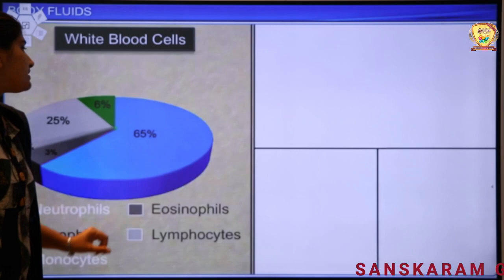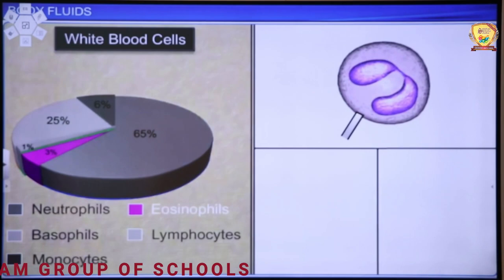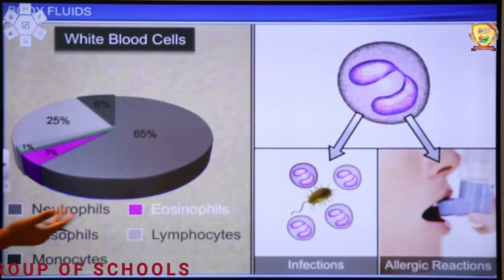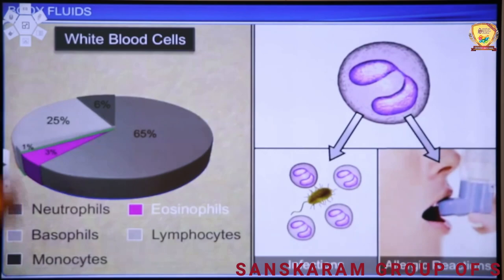We have covered neutrophils and monocytes. Now we will look at eosinophils. Eosinophils play a role in allergic reactions and infections — they play a very important role in allergic reactions or hypersensitive reactions, such as asthma, pollen allergy, etc.